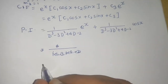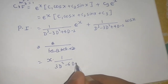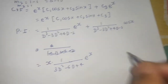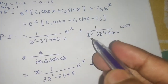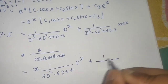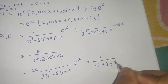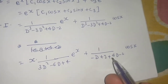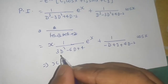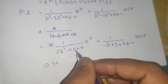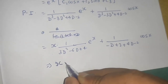When the denominator is 0, we multiply by x and differentiate the denominator. The derivative of f(D) is 3D² − 6D + 4. Substituting D = 1 gives 3 − 6 + 4 = 1. So the e^x part gives x·e^x / 1 = xe^x.